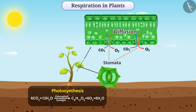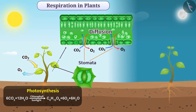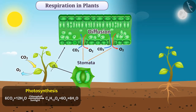Photosynthesis occurs during the day. Therefore, carbon dioxide produced in the cell during respiration is used in photosynthesis, and oxygen is released from cells during the day. At night, the process of photosynthesis does not occur, so carbon dioxide is released from the cells of the plants.